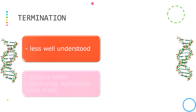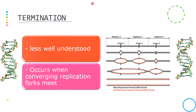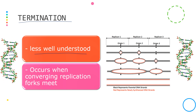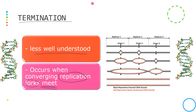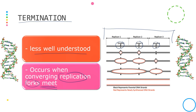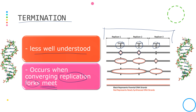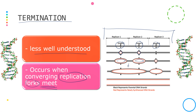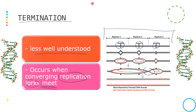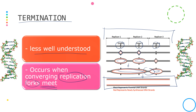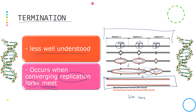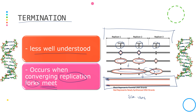The final stage is termination, which is less well understood compared to the other stages. Most commonly, termination happens when the replication forks from adjacent origins of replication meet each other. When this occurs, replication ends, and we end up with two DNA strands. As the semi-conservative model describes, each new double-stranded DNA consists of one original template strand and one newly synthesized strand.